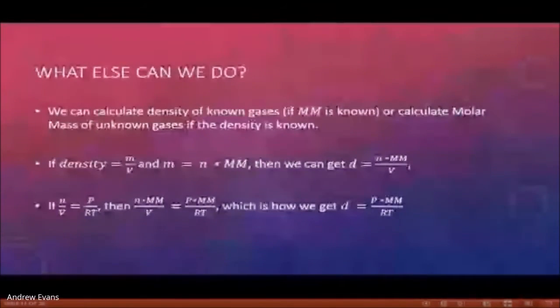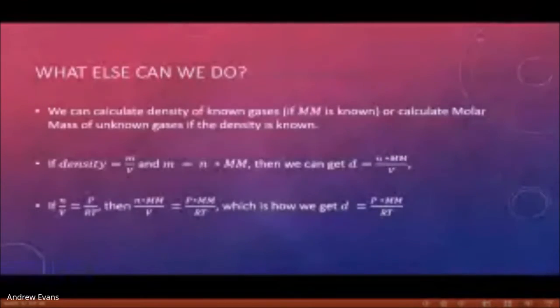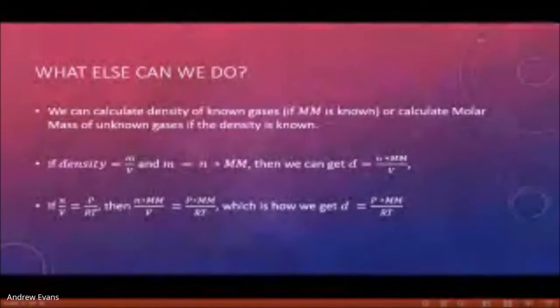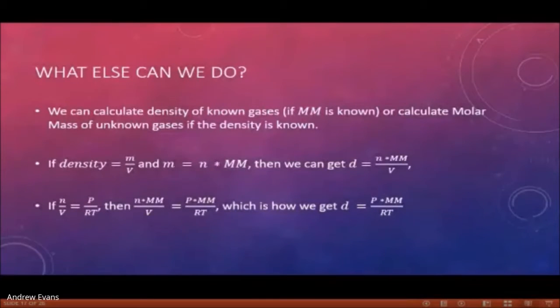Rearranging the ideal gas equation, moles over volume equals pressure over RT. Now if we multiply both sides by molar mass, we replace moles times molar mass over volume with density. So essentially the density of a gas equals pressure times molar mass divided by RT. This is how we can calculate the density of air — it's about 22 — and we can use this equation to understand why hot air rises and cold air falls.